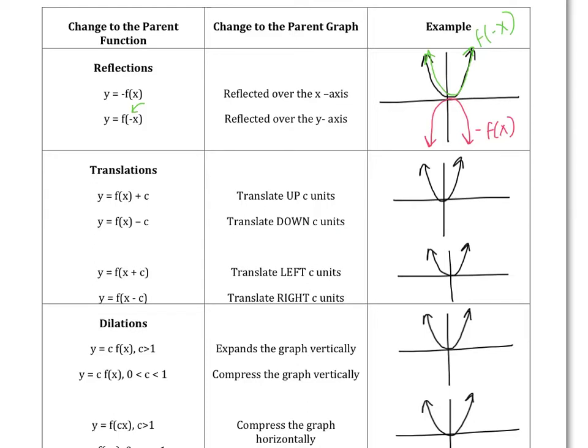Then we have translations, which come from adding values either outside the function or inside the function. And you'll remember from our sine and cosine graphs, when you add values outside the function, you move your graph up that many units, and when you subtract a number outside the function, you move that graph down that many units. So if I have f of x plus c, then my graph will be up that many units. It's a bad drawing, sorry. And if I'm down c, then my graph will shift down, the vertex of my graph will shift down c units.